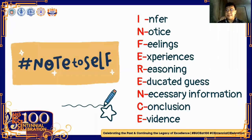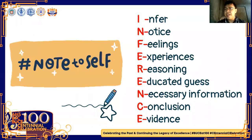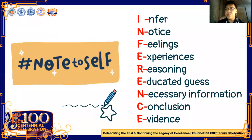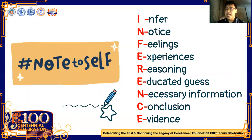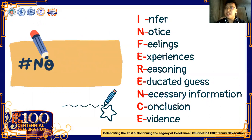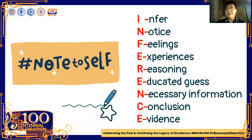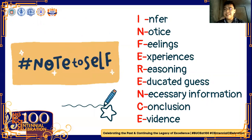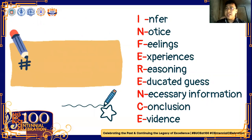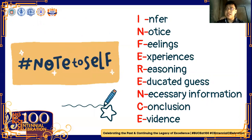To have a clear understanding of inference, note this mnemonic: I for Infer, N for Notice, F for Feeling, E for Experiences, R for Reasoning, E for Educated guess, N for Necessary information, C for Conclusion, E for Evidence.